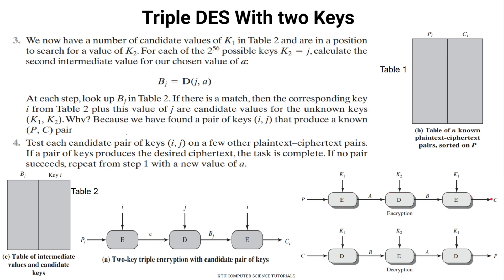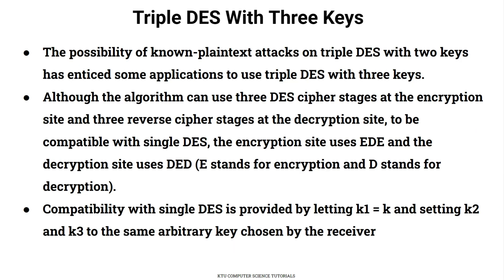We try these candidate keys against all known plaintext-ciphertext pairs. When a correct match is found, our task is successful — meaning we have found the correct K1 and K2 values. This is the known-plaintext attack on Triple DES with 2 keys.